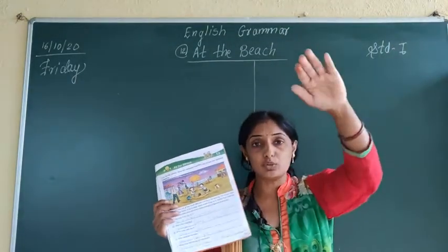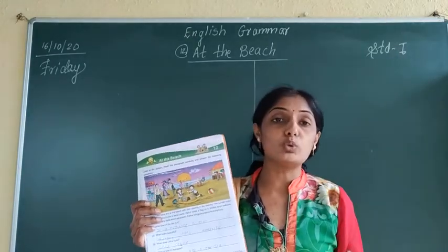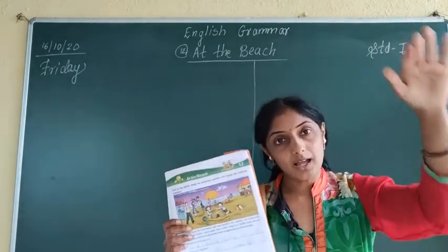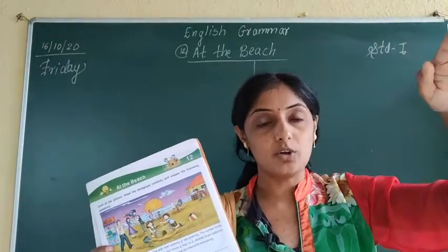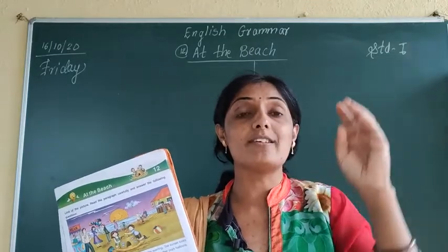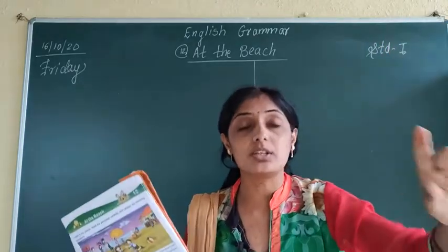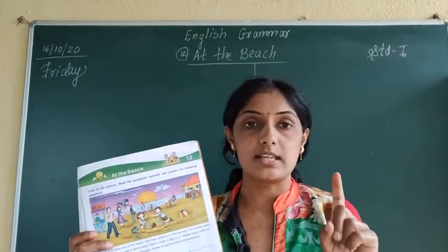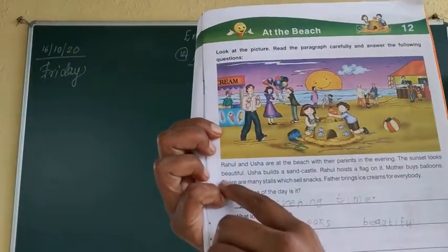Sunset means when the sun sets in the evening — that is called sunset. And when the sun rises in the morning — that is called sunrise. Keep in mind these are two different things: when the sun rises it is sunrise, and when the sun sets it is sunset. So here it is: the sunset looks beautiful.